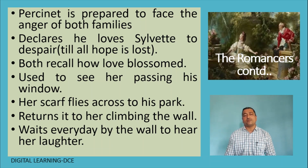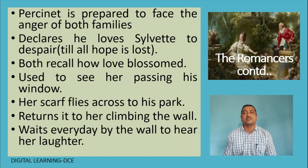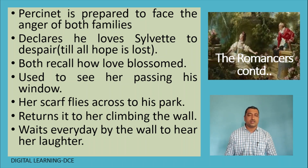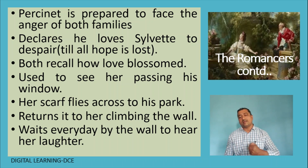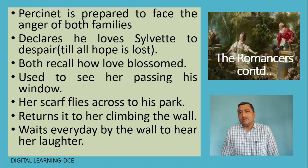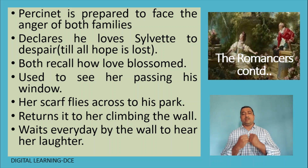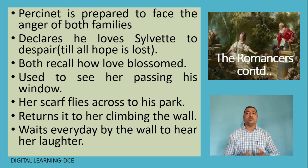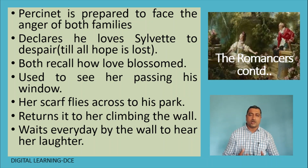Persinet is prepared to face the anger of both families because he wants his love, and he declares he loves Silvette to despair — meaning until hope in him is lost, he loves her.